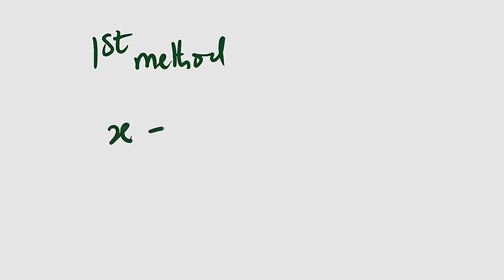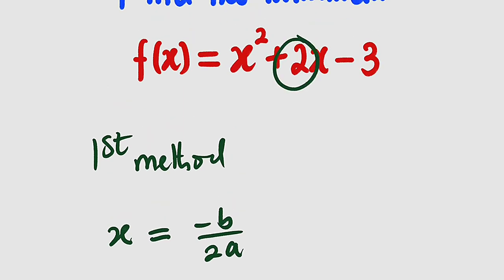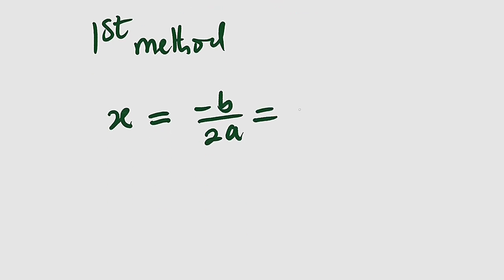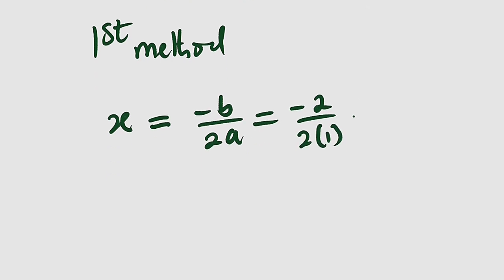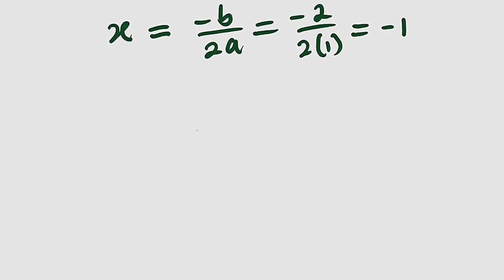x at that point is equal to minus b divided by 2a. b is always the coefficient of x, while a is the coefficient of x squared. So this is equal to minus b, which is 2, divided by 2 times a, which is 1. If you simplify this, you shall obtain negative 1. So x is equal to negative 1. You can also use differential calculus to find this, because at this particular point the first derivative is equal to 0.